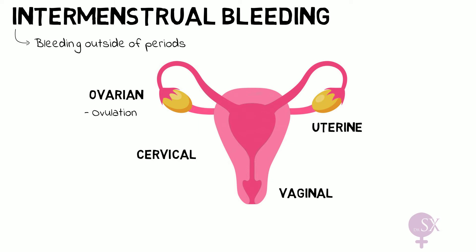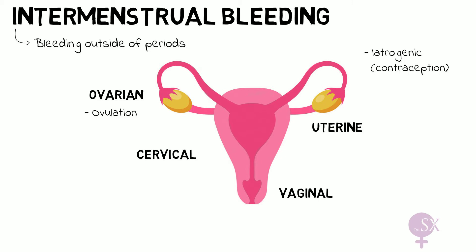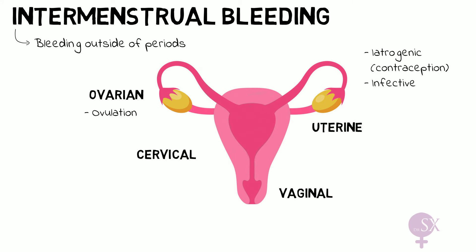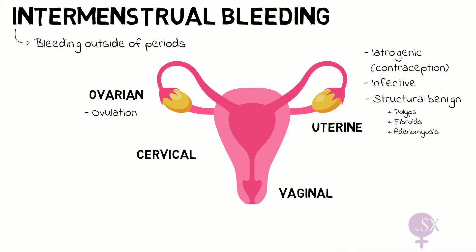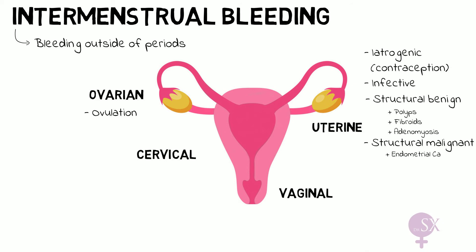Next we've got the uterine causes. We have iatrogenic causes, mainly referring to hormonal contraceptives, because these can result in irregular bleeding. This can be due to the medication itself, for example because of a missed pill, or because of interactions with other drugs. Then we've got infective causes such as endometritis, structural benign causes such as endometrial polyps, fibroids, and adenomyosis, and structural malignant causes referring to endometrial cancer.